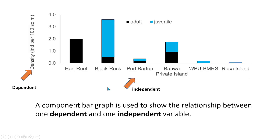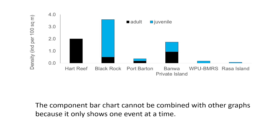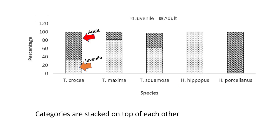A component bar graph is used to show the relationship between one dependent and one independent variable. It is used to present a single set of values in a chart format. The component bar graph cannot be combined with other graphs, because it only shows one event at a time. In a component bar graph, the categories are stacked on top of each other. In this graph, we can see that the percent composition of the adult giant clams is stacked over those of the juvenile clams.